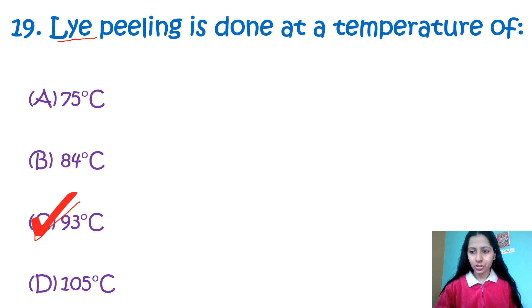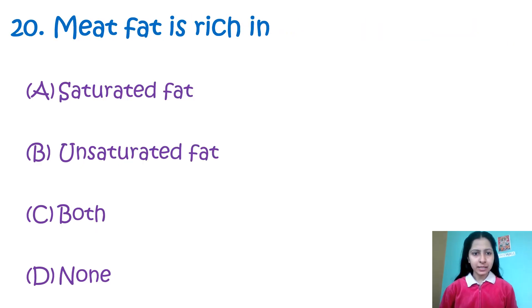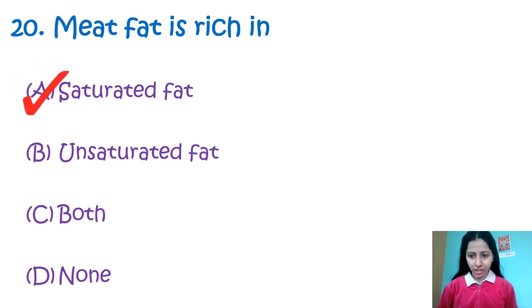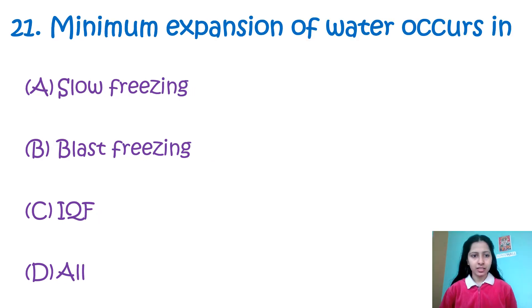Question number 20: Meat fat is rich in — saturated fat, unsaturated fat, both, or none. Meat fats are actually rich in saturated fats and monounsaturated fats, but maximum they are present in saturated form. So option number A — saturated fat — is the correct answer.